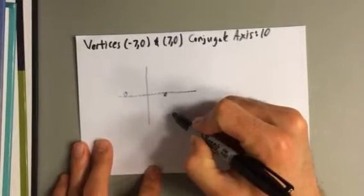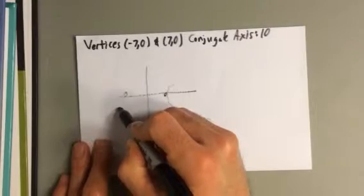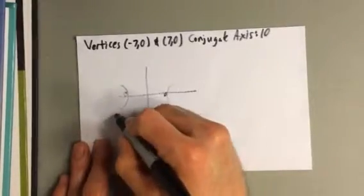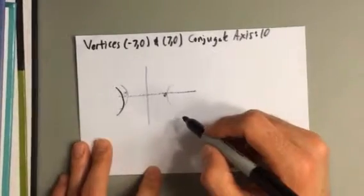So I know that this hyperbola is going to be opening to the left and to the right. So I know that x is going to be first, my x fraction is going to be first.